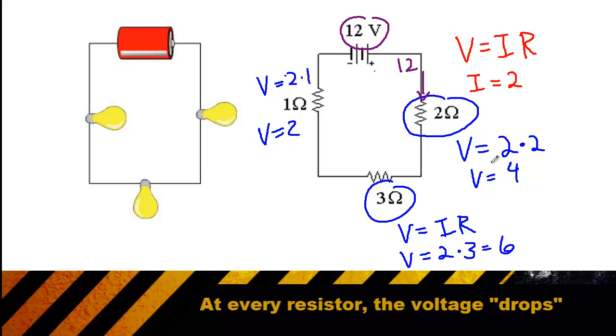Then our voltage drop we discovered was 4. That means after the electricity passes through that resistor, the pressure in the line is only 8. Then as the electricity passes through the next resistor, we lose even more voltage. This time we lost a voltage of 6. So our new voltage is 2. And then on the final resistor, we lose the remaining 2 volts we had, giving us a final voltage of 0.